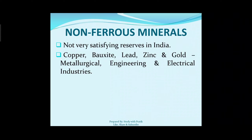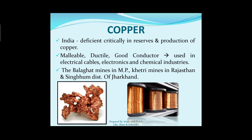Non-ferrous minerals are not very satisfying resources in India — copper, bauxite, lead, zinc, and gold are not found in large quantities here. These are used in metallurgical, engineering, and electrical industries. Copper is a non-ferrous mineral widely used in electrical wiring. India is critically deficient in reserves and production of copper. Copper is malleable, ductile, and a good conductor of electricity and heat — it can be made into sheets, pipes, and wires. It is used in electrical cables, electronics, and chemical industries. Copper is found in the Balaghat mines of Madhya Pradesh, Khetri mines of Rajasthan, and Singhbhum district of Jharkhand.